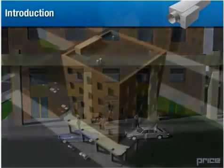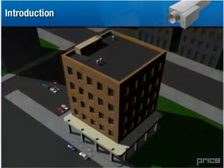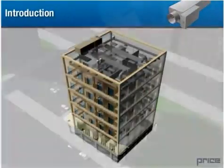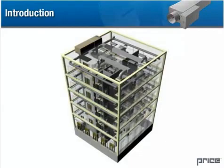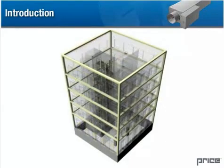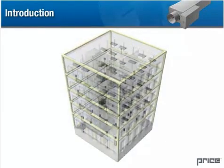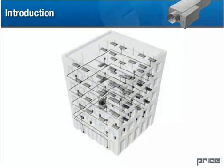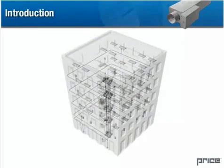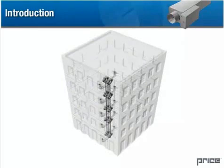The modern commercial or office building consists of many sophisticated systems. These systems include foundation and support structures, electrical and lighting, and plumbing and fixtures.